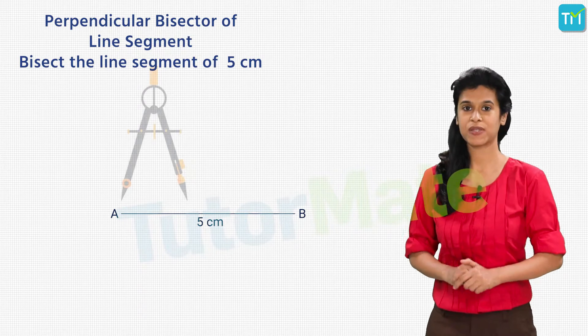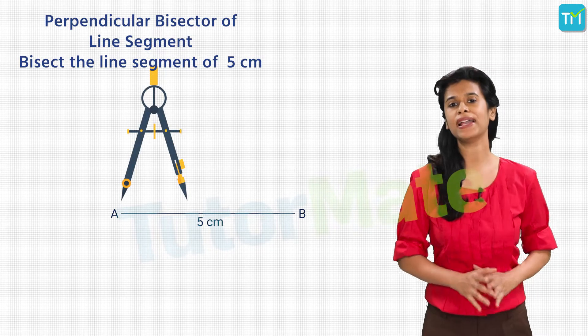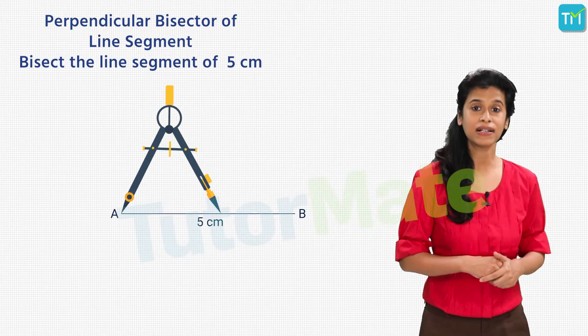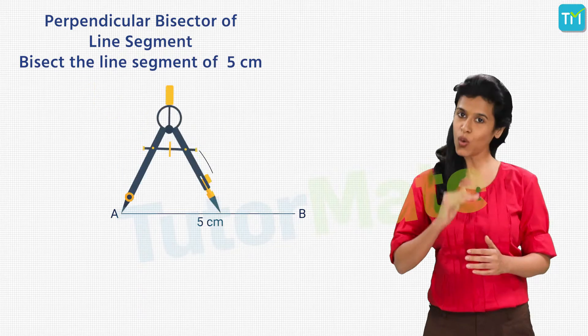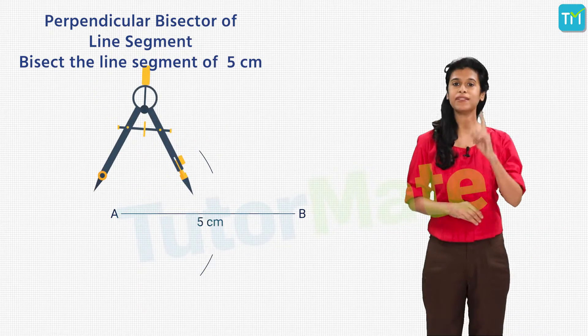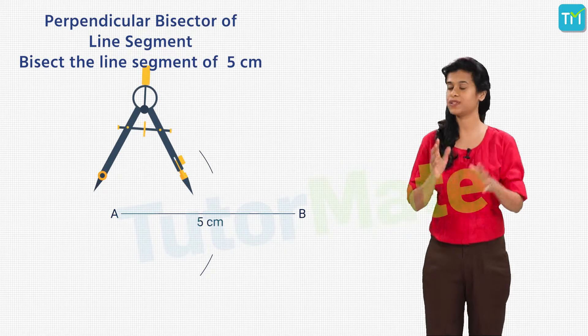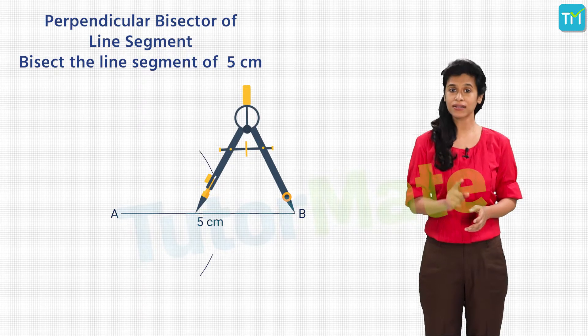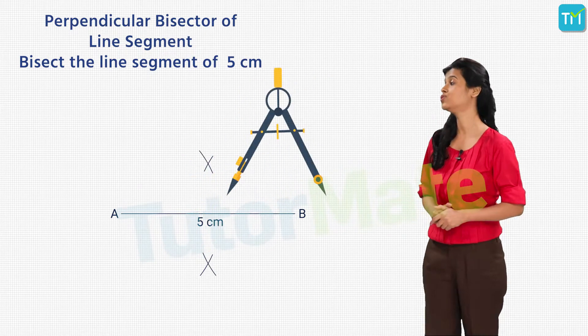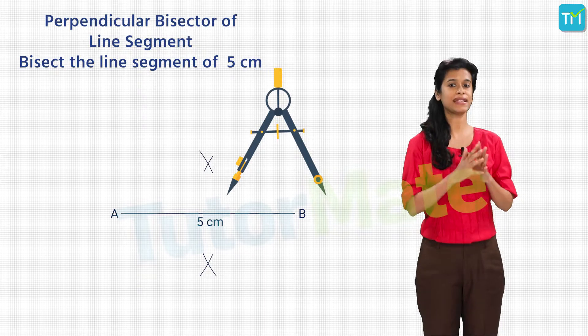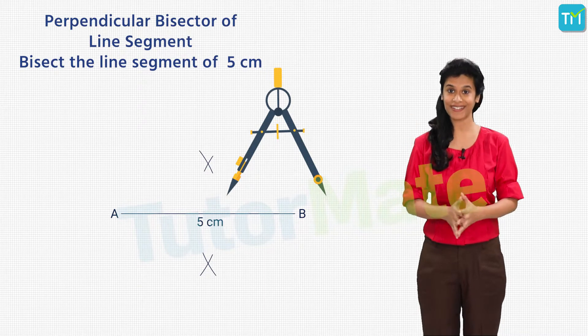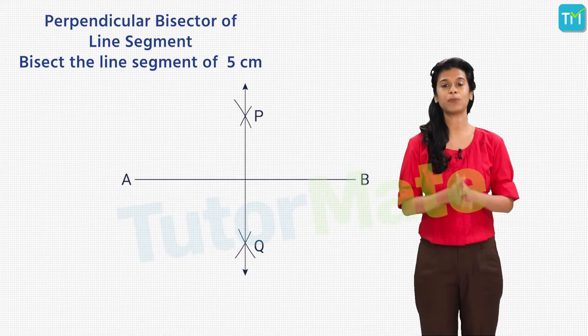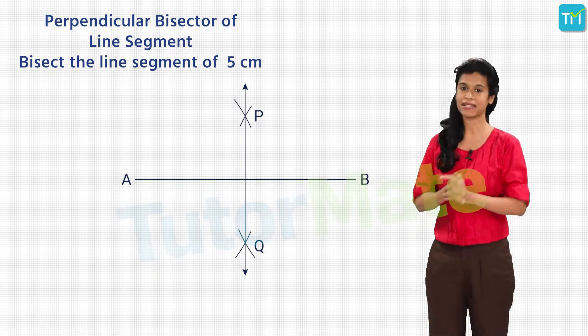Next, on our compass, take a radius more than half the length of AB. Then taking A as center, draw arcs one above and one below the segment AB. Now, keeping the radius exactly as it was in the previous step, place your compass on point B and draw two arcs such that they cut the previous arcs drawn from A. Let us label the points at which the arcs cut each other as P and Q.